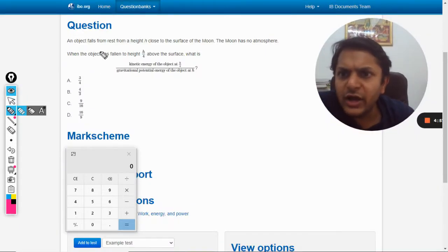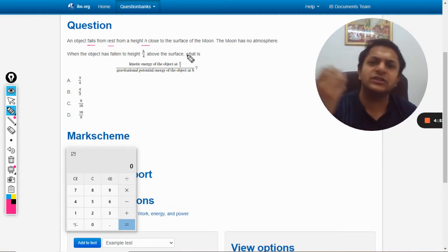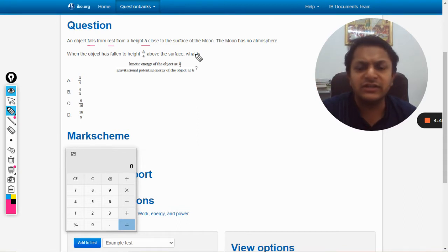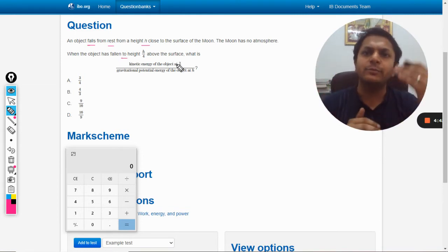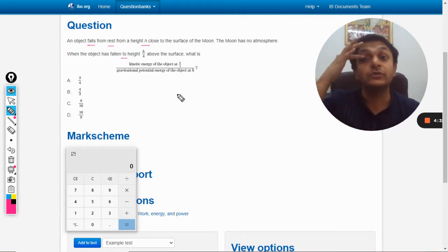In this question, an object falls from rest from a height h close to the surface of the Moon. The Moon has no atmosphere, so there is no resistive force. When the object has fallen to height h by 4 above the surface, it has fallen by 3 by 4. What is the ratio of kinetic energy of the object at h by 4 divided by gravitational potential energy of the object at h?